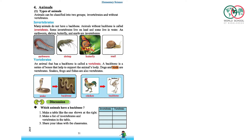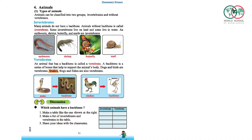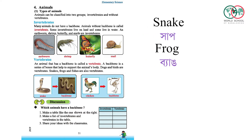Dogs and birds are vertebrates. Dogs means kukur, birds means paki. Snake, frog, and fish are also vertebrates. Snake means saap, frog means bang, and fish means mach.